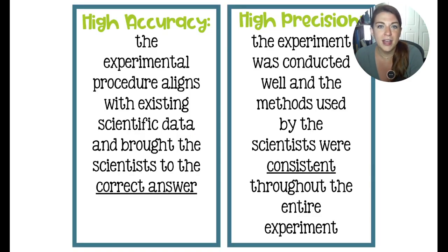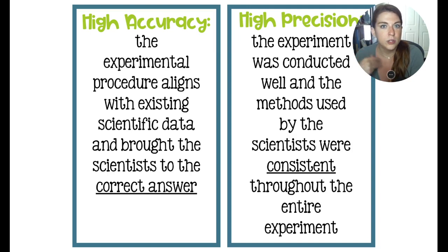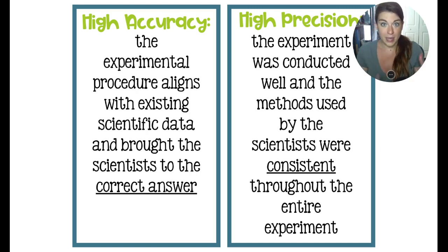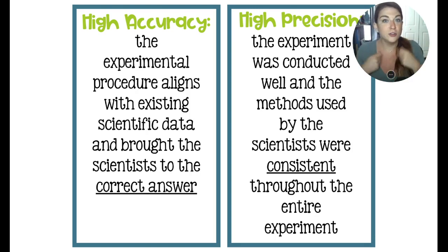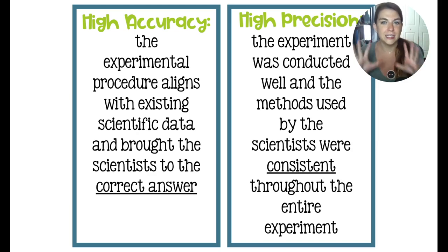To recap: if you have high accuracy, it means your procedure is pointing you in the right direction — you're taking the correct steps to get to the correct answer, and what you're doing will more or less mimic what other scientists have done. High precision really comes down to what we call your bench work — your skills with your hands as a scientist, including your tools, what you're mixing, and what you're measuring.